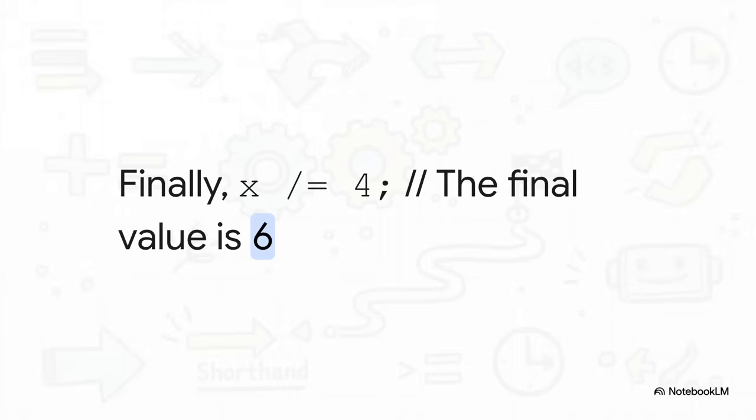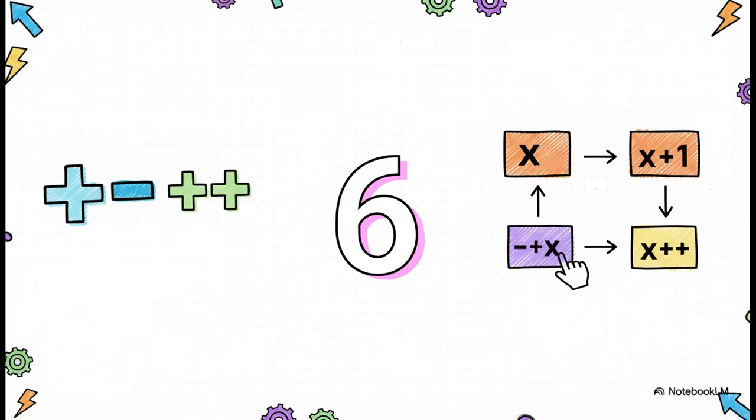And for our last step in this little journey, we'll use the division assignment x divided by four. We take that 24, we divide it by four, and we land on our final value, which is six. And there it is, the final output is six. But using these shorthand operators, we just did four different calculations in a way that was really clean and honestly pretty easy to follow.